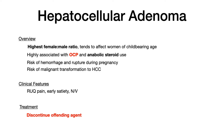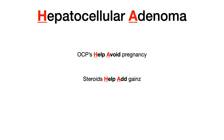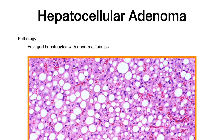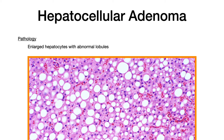Clinical features are the same: right upper quadrant pain, early satiety, nausea, and vomiting. Treatment is really important — because hepatocellular adenoma is associated with oral contraceptive and anabolic steroid use, the best treatment is to simply discontinue the offending agent. A handy mnemonic: HA stands for hepatocellular adenoma. OCP — they Help Avoid pregnancy; anabolic steroids — they Help Add huge gains. Histology shows enlarged hepatocytes with abnormal lobules.